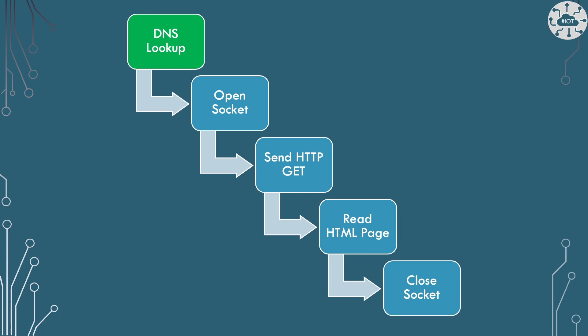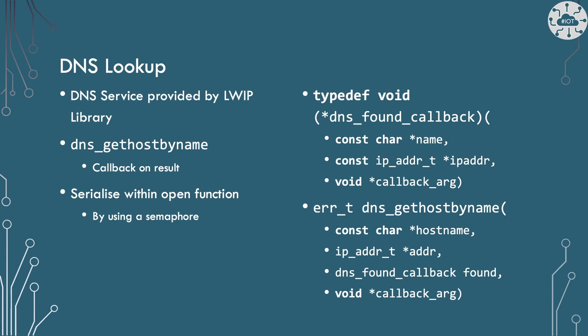Our first challenge is doing a DNS lookup of the target hostname to get the IP address to connect to. The LWIP library provides the function DNS gethostbyname, which takes a callback function and runs asynchronously. For our purposes we don't want asynchronous — we want to do the DNS lookup and wait for the response or timeout with an error. So we use a FreeRTOS semaphore to serialize this callback: once we've called gethostbyname, our code waits for the semaphore; if it doesn't arrive within a few seconds, we timeout. The semaphore is given from the callback function.